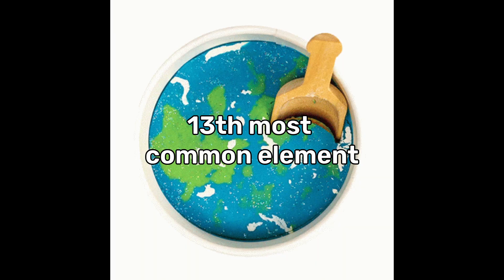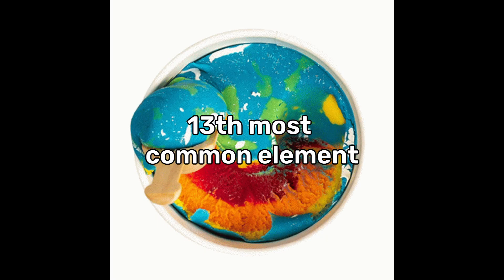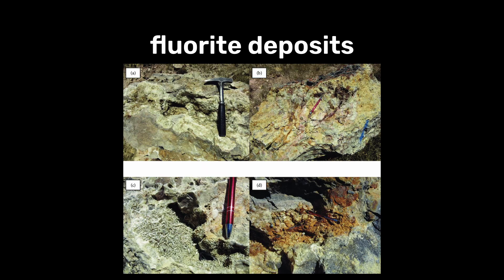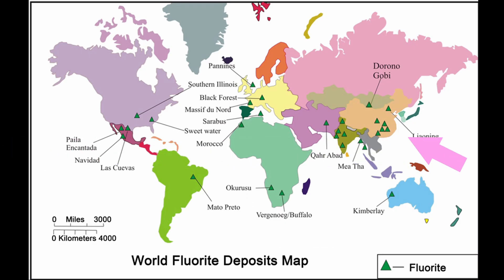Fluorine is the 13th most common element in the Earth's crust, and fluorite deposits are found in many countries, including China, Mexico, and South Africa.